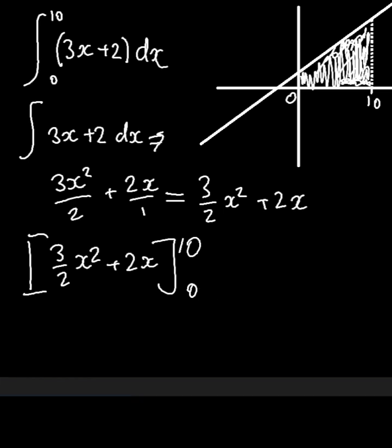Now we do some basic substitution by putting our function in brackets, substituting 10, and then subtracting the result when we substitute 0. We can compute this using a calculator.